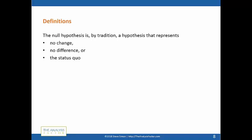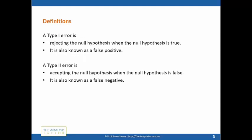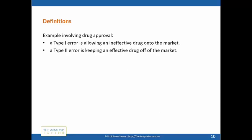Let me review some definitions, because this material has the potential to seem backwards or confusing. The null hypothesis — by tradition — is the hypothesis that represents no change, no difference, or the status quo. It's the hypothesis that has the equal sign in it. Type I error is rejecting the null hypothesis when the null hypothesis is true — a false positive. Type II error is the reverse: accepting the null hypothesis when the null hypothesis is false — a false negative.